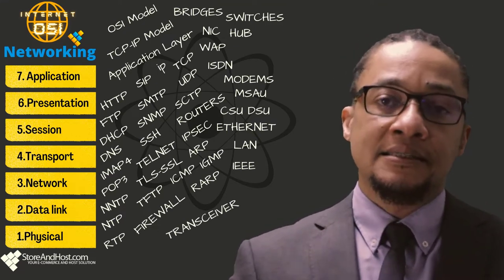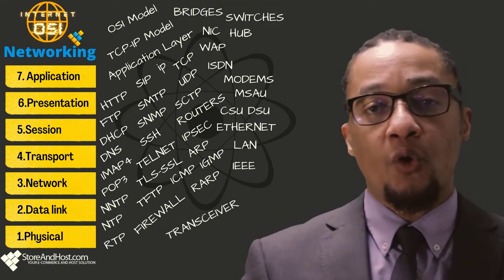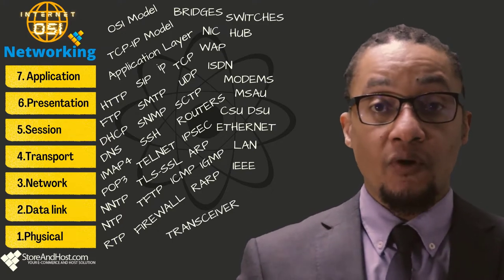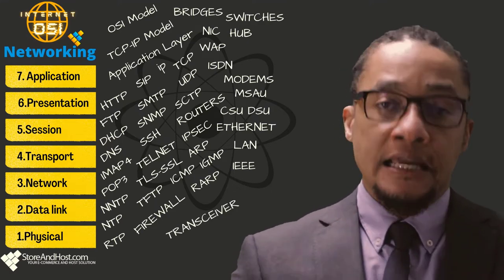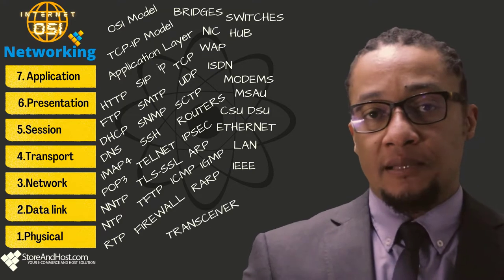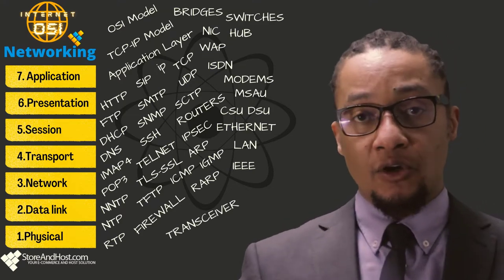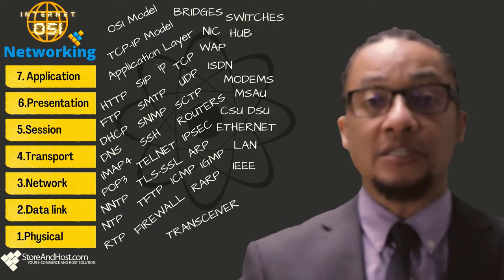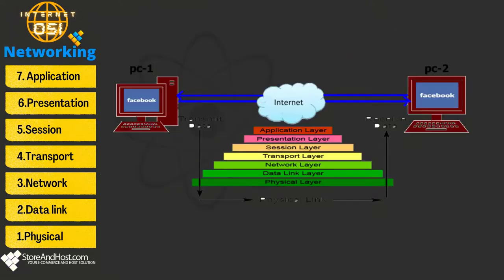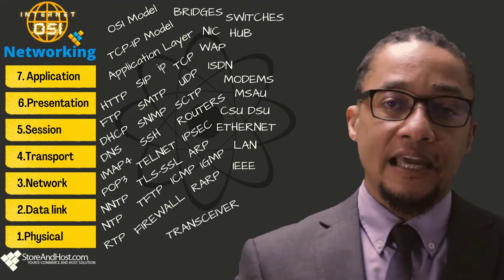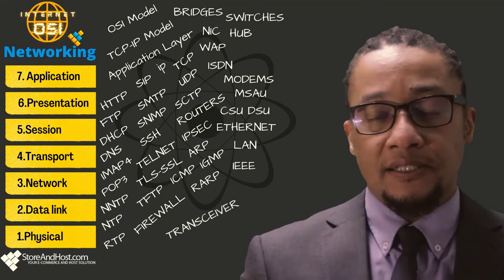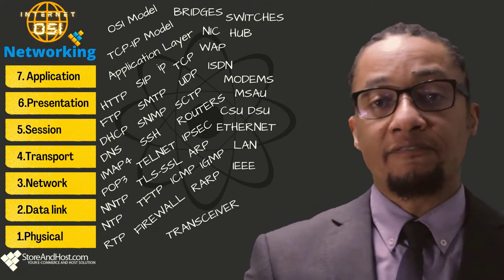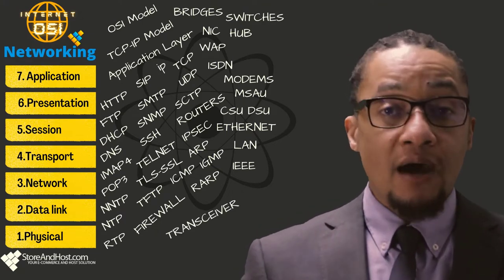The presentation layer's most important function is formatting data — different formats from all sources are made into a common uniform format that the rest of the OSI layers can understand. It is responsible for protocol conversion and data encryption and decryption. The application layer is used for applications that the user sees and directly works on. It allows access to network services that support applications, includes browsers like Firefox and Chrome, and directly represents services like file transfer and email.